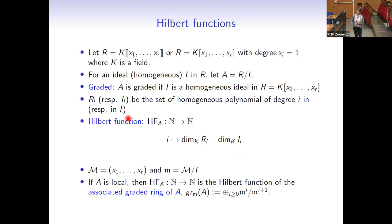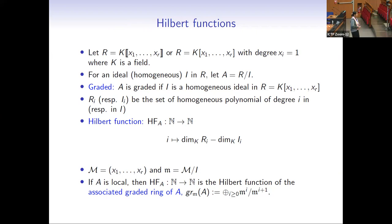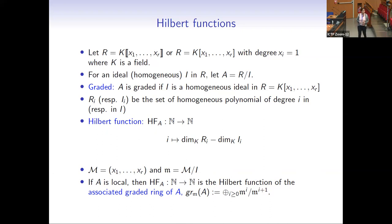I write m for the maximal ideal generated by x_1, x_2, ..., x_r in the power series ring, and also in a polynomial ring, and I denote by small m the maximal ideal in the local ring R. In the local case, the Hilbert function of the ring A is the function of the maximal ideal, which is the Hilbert function of the associated graded ring of A, given by the dimension of m^i over m^{i+1}. This ring plays an important role in singularity theory.